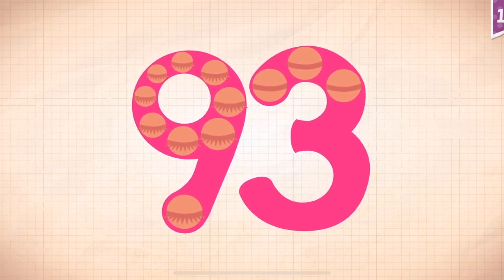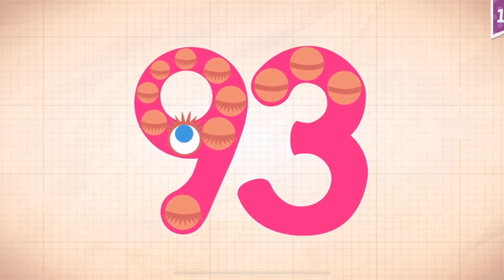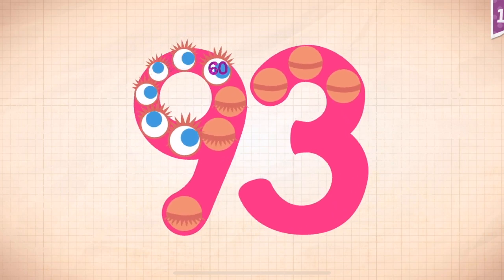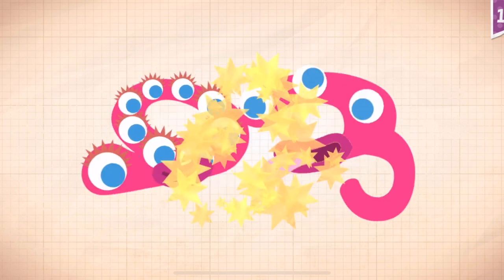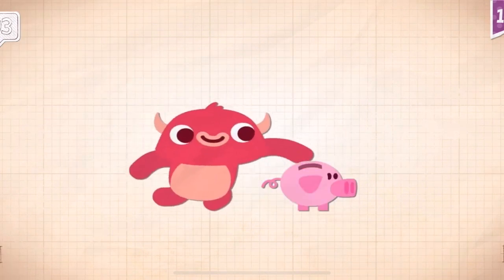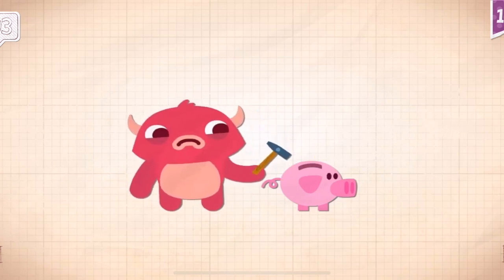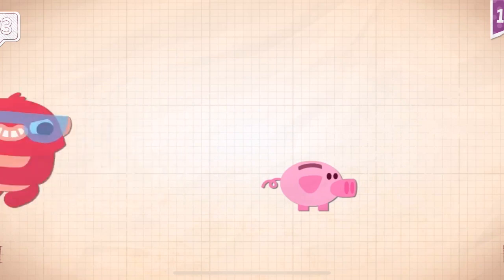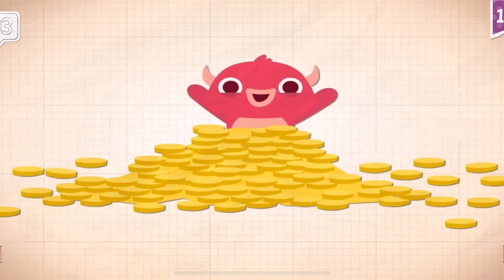Touch the monster's eyes to wake it up. 10, 20, 30, 40, 50, 60, 70, 80, 90, 91, 92, 93. Yay! 93! Pinkerton saved 93 coins in his piggy bank.